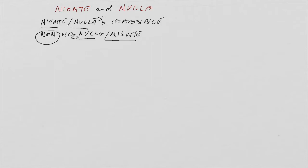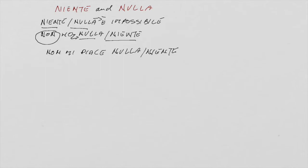In any case, whatever position they occupy in the sentence — whether they follow the verb with the negative non, or precede the verb without non — the meaning stays exactly the same. For example, non mi piace nulla or niente is perfectly equivalent to niente or nulla mi piace, and they both mean 'I don't like anything.'